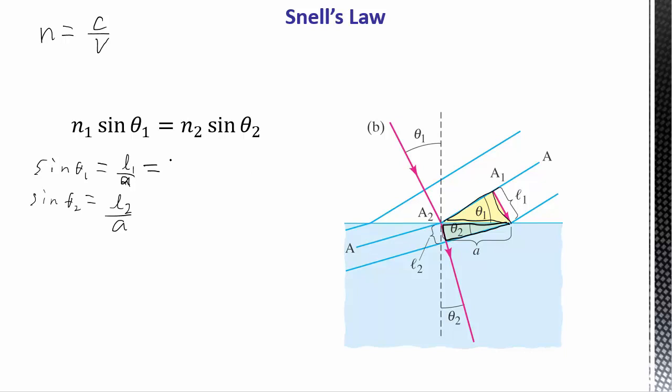Now this length here is how far it travels in a given time. So we can substitute in velocity times time, velocity one over A. And then we can substitute in for this guy, velocity two. So the reason it doesn't travel as far is because this velocity two is less than velocity one. Times a given time over A. And then if I divide these two equations, I'm going to have sine theta one over sine theta two equals V1 T over A over V2 T over A. The TA stuff is going to cancel out.